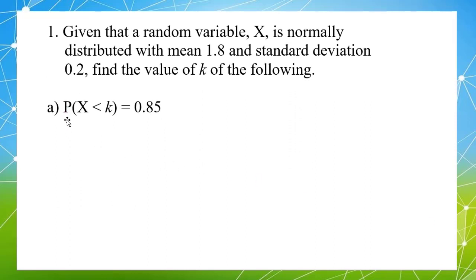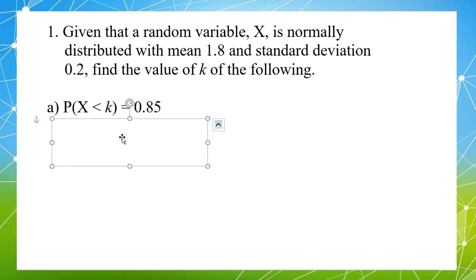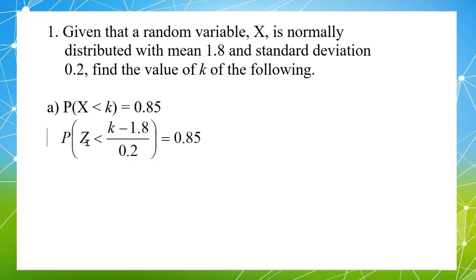Question 1: the probability that X is less than k equals 0.85. Find the value of k. To use the standard normal distribution table, we first need to change X into Z. So when we change X into Z, k must be subtracted by the mean 1.8 and divided by the standard deviation 0.2.